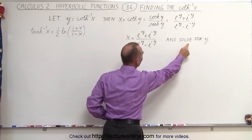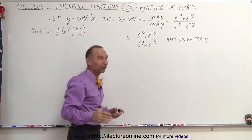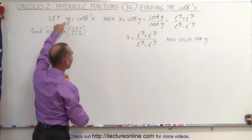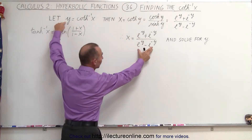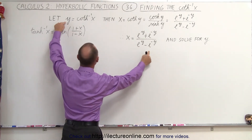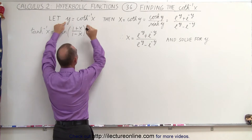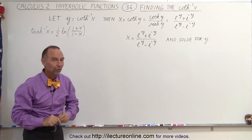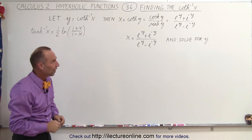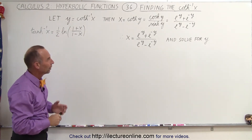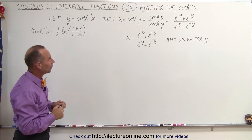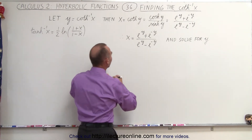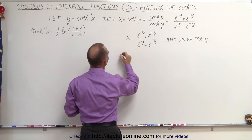Now we're going to solve that for y, because once we find out what y is equal to in terms of this, then we can set that equal to the inverse hyperbolic cotangent of y. So that's the strategy. So let's see what we can do — we can cross multiply, start with that.